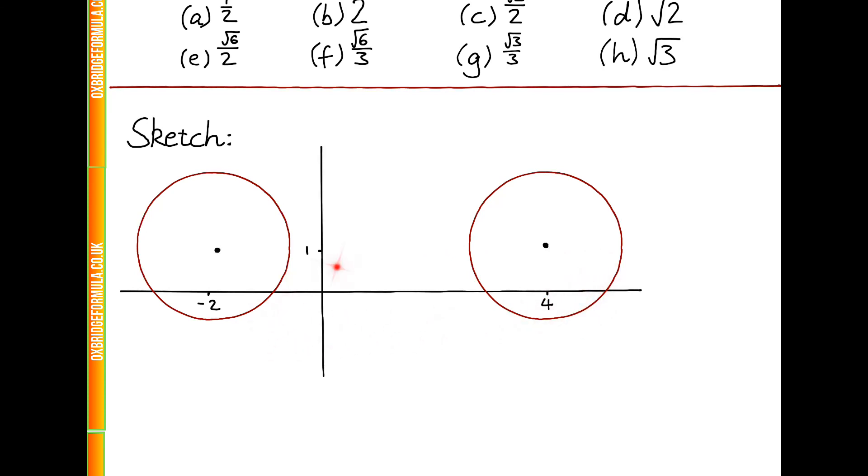And then L is a line with positive gradient, which is tangent to both circles, so that's going to have to look something like this. And L makes an angle theta with the x-axis, so this angle here is theta.